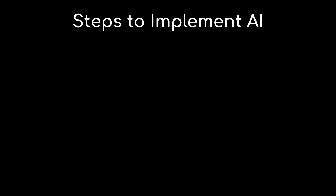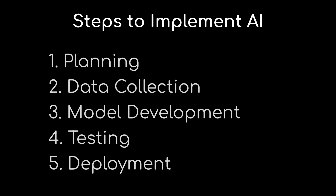Today, we're going to talk about the first phase of implementing an AI solution within your organization, and we're going to break it down into five categories: planning, data collection, model development, testing, and straight-up deployment.